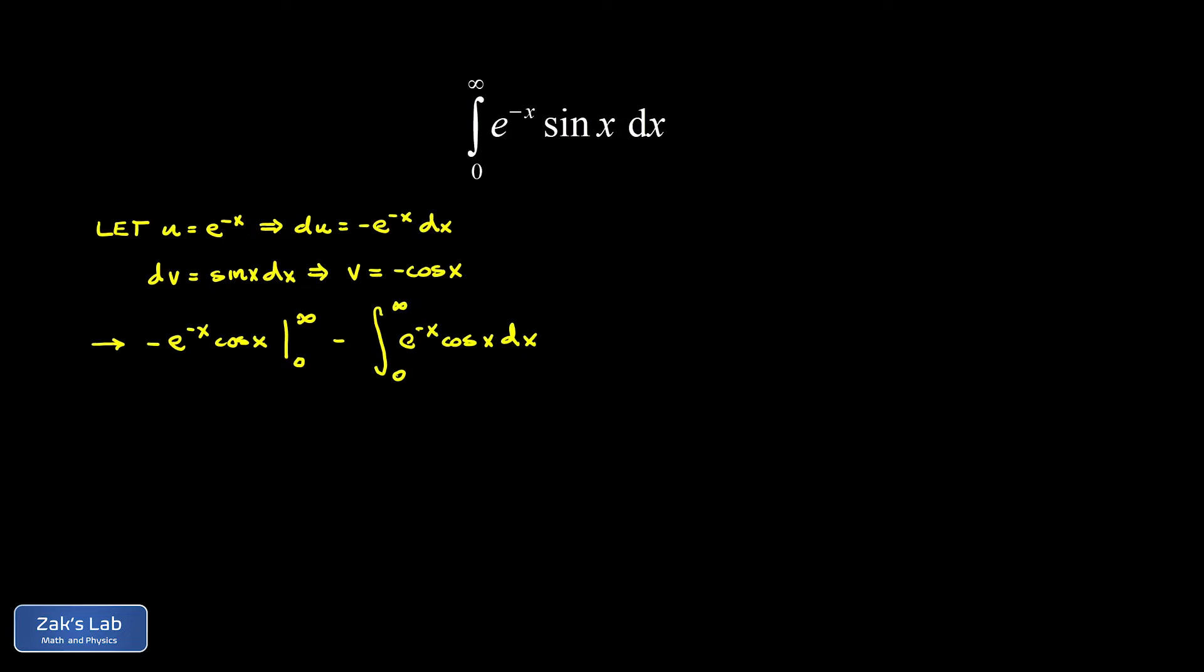So at first glance, you might say we didn't really make any progress here because we got left with an integral that's just as complicated as what we started with, but this is a natural part of the integration by parts looping trick, and we just iterate the process one more time.